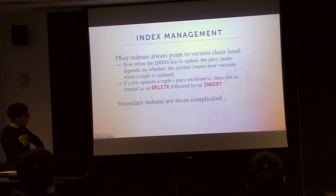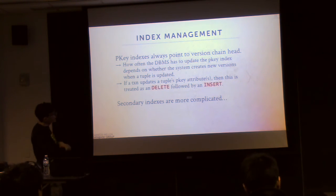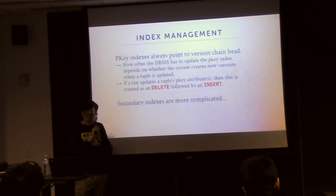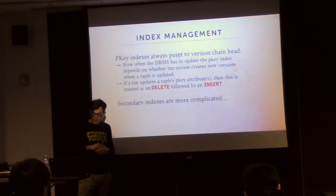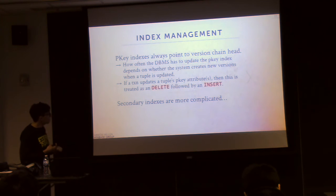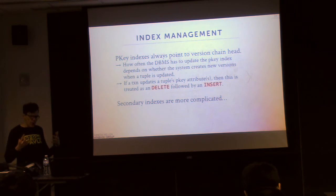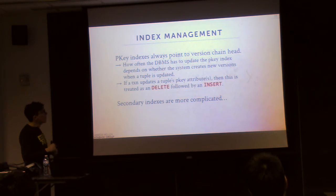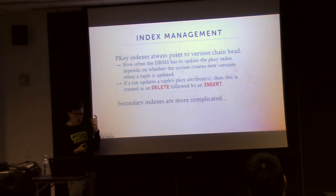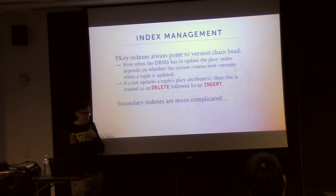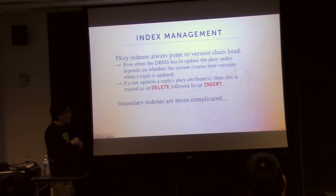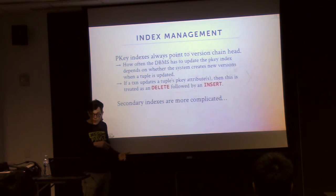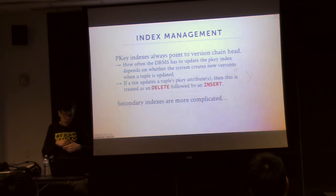The last design decision — index management — is one I think hasn't been covered well in recent papers but is actually a big deal. The question is: what should the indexes actually point to for our version chains? For primary key indexes, they always point to the version chain head, regardless of ordering or storage scheme — you just need to know you're at the beginning of the version chain. How often the database system has to update this index depends on how often new versions are created and whether you're using oldest-to-newest or newest-to-oldest ordering. If a transaction updates an attribute that is part of the primary key index, rather than trying to be smart about flipping that one attribute while keeping all the pointers working nicely...